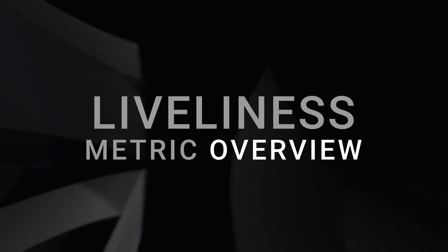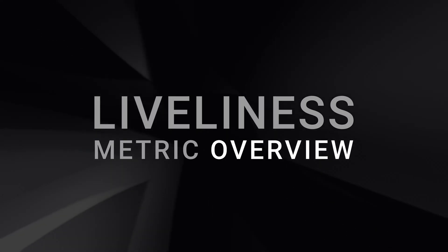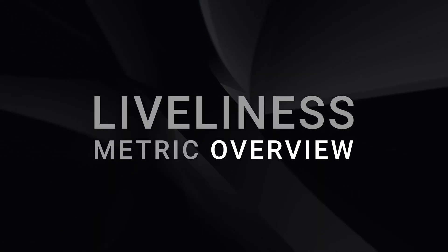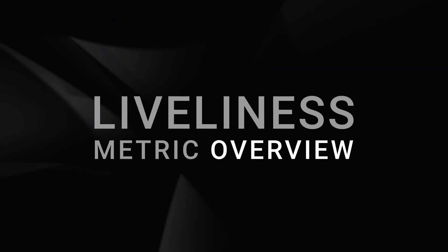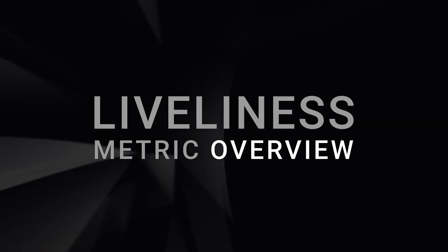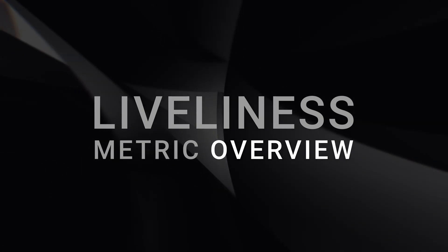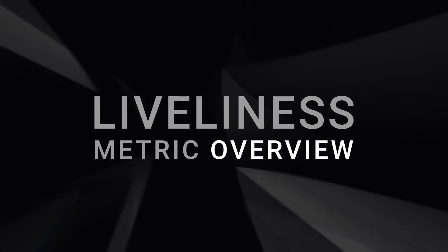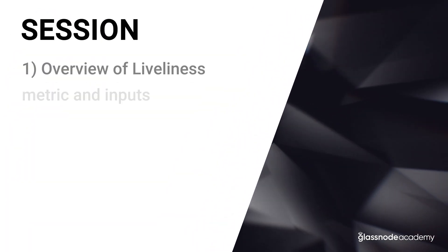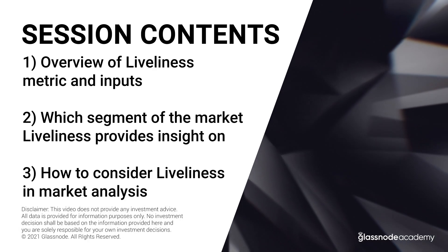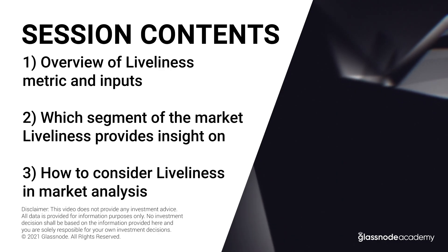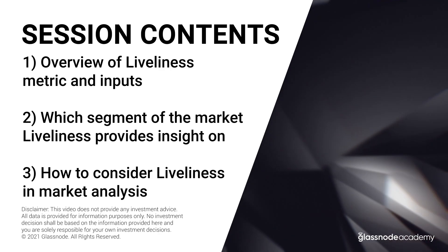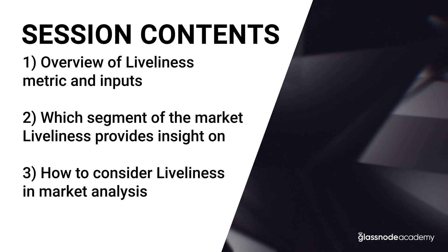Hello and welcome to Glassnode Academy. Today we're looking at a Bitcoin metric called liveliness, which is a macro view of the overall on-chain activity and utilization of a network relative to how long the protocol has been alive — its global lifespan relative to the amount of on-chain activity at any point in time. We'll run through an overview of the liveliness metric, its inputs, which segment of the market it provides insight on, and how we consider liveliness in our market analysis.